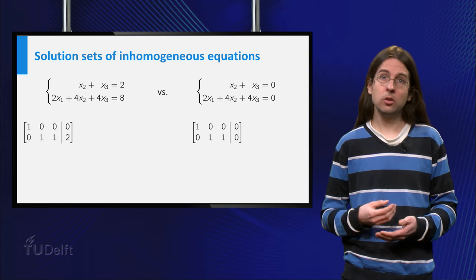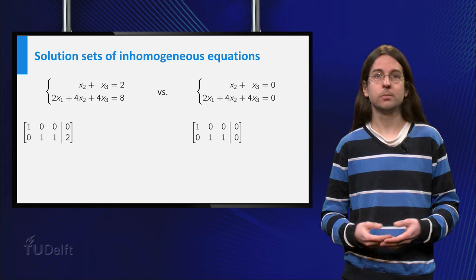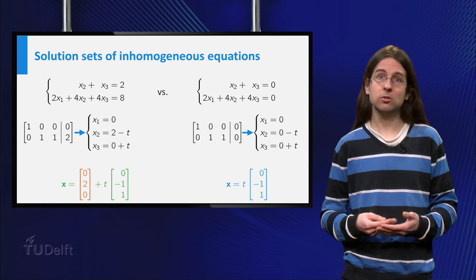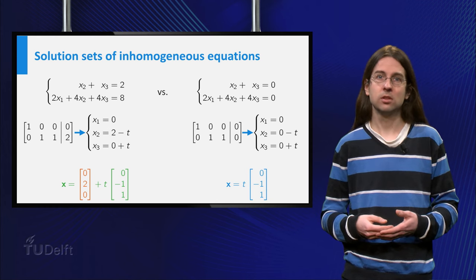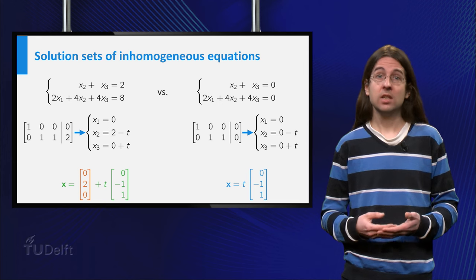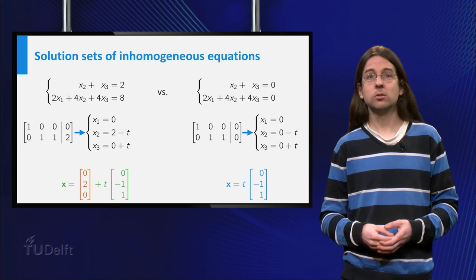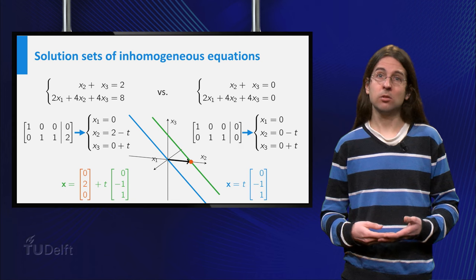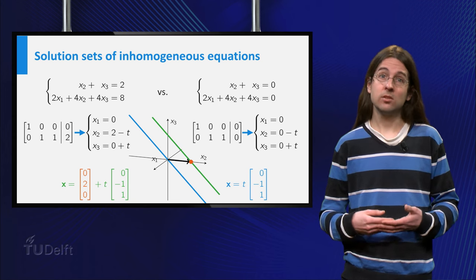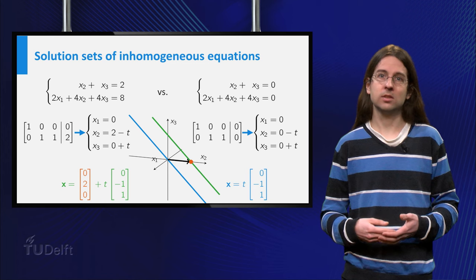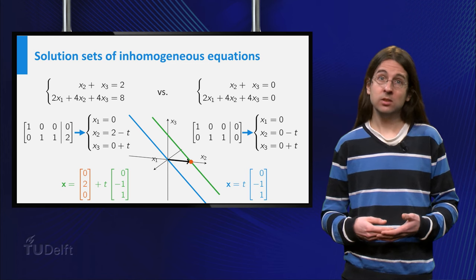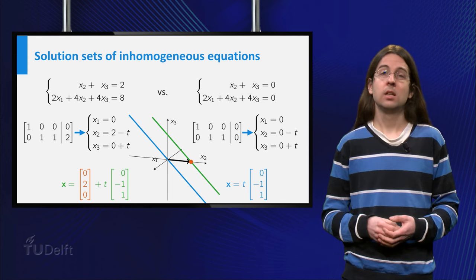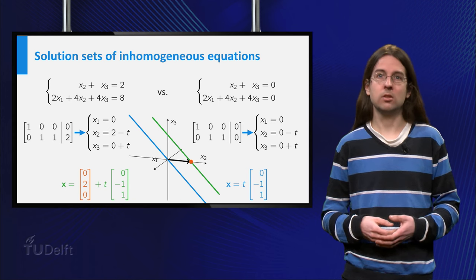Let us now look at the associated set of equations to the reduced echelon form. We see that the solutions of the inhomogeneous equations are similar to the solutions of the homogeneous equations. The only difference is that you have to add a constant vector to the solutions of the homogeneous equations. Geometrically, this means that the solution set of the inhomogeneous system is a translate of the homogeneous system. As you see in the picture, the green solution of the inhomogeneous system is still aligned in the same direction as the blue solution to the homogeneous equation.